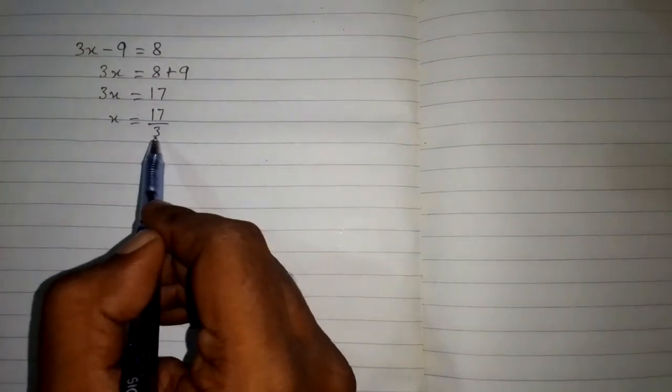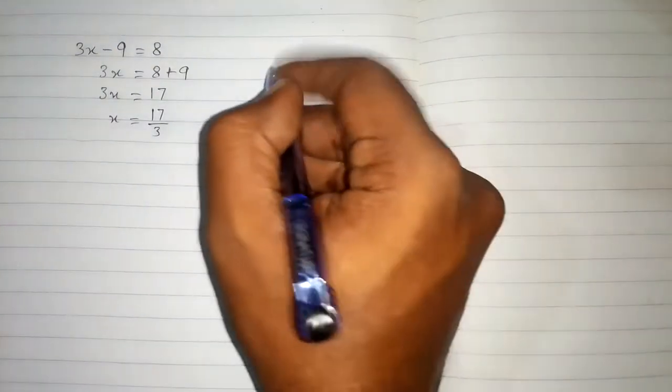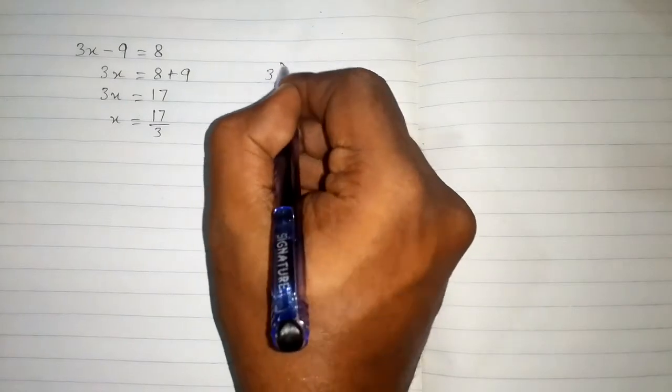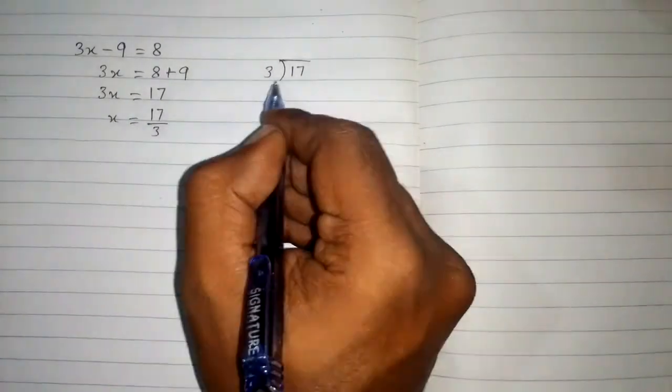Now we can see that this fraction is an improper fraction, so we can convert this improper fraction into a mixed number. How we can make this a mixed number? We will divide 17 by 3.